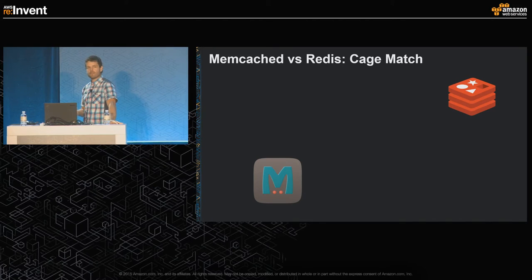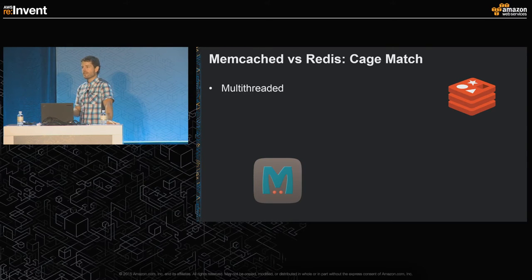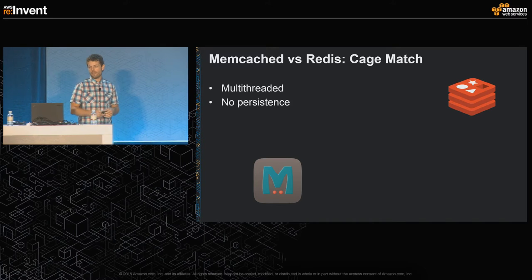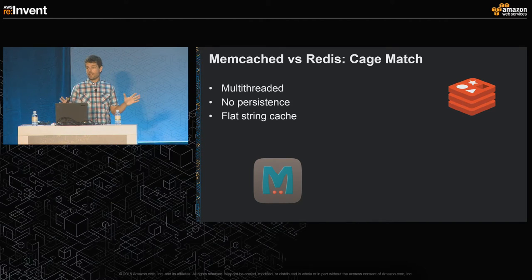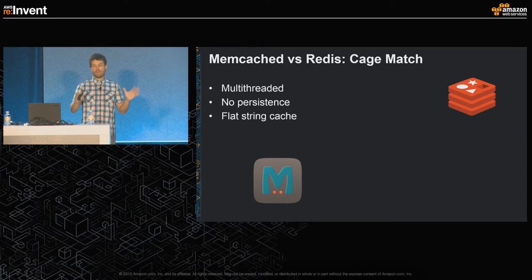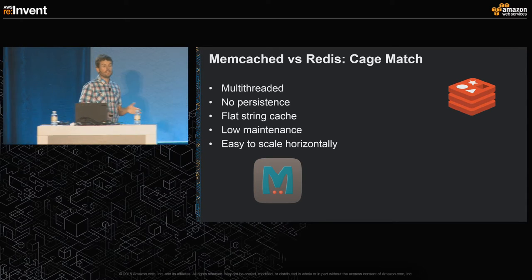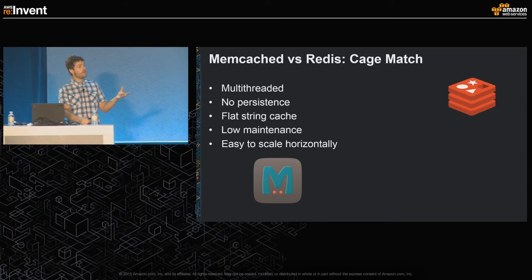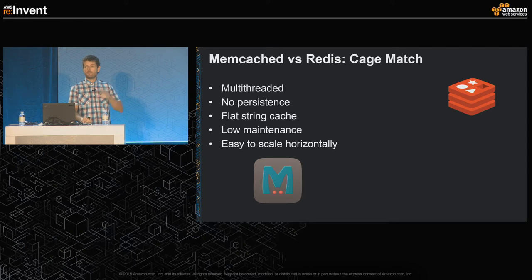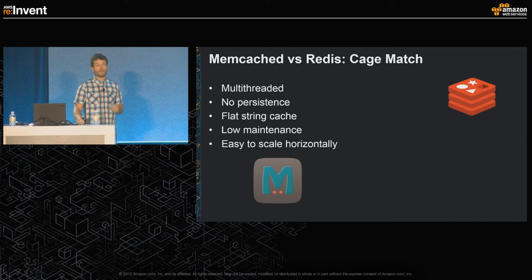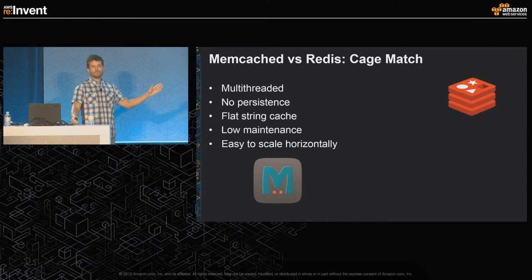Memcache is multi-threaded with no persistence — when you bring up a node it's empty, and if the node goes away you lose that cache memory. It's designed to be a flat string cache, originally for caching flat HTML pages and serialized JSON. Because it's the simpler option, it's very low maintenance and easy to scale out horizontally within ElastiCache by just changing the number of nodes. It's still hugely popular — Facebook and Twitter have massive Memcache installations — and has tons of library support. If you're just looking for a cache, Memcache is still a great choice.